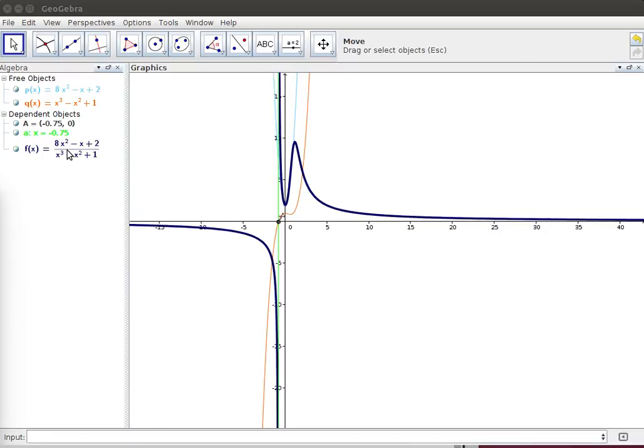Secondly, because the degree of the denominator is greater than the degree of the numerator, there's a horizontal asymptote.